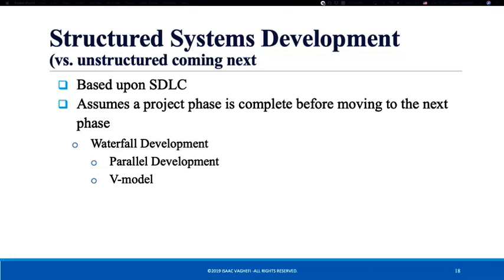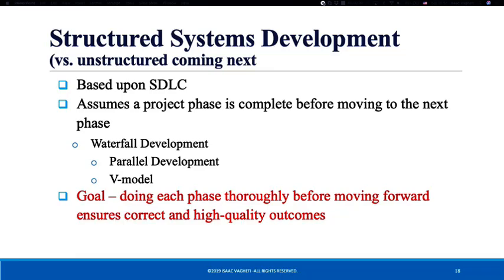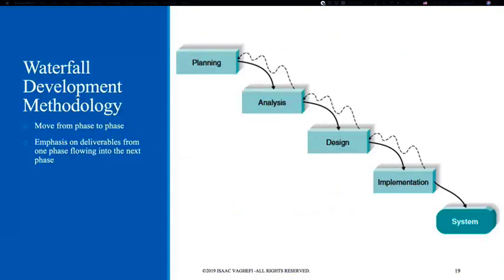A lot of methods are very structured compared to unstructured methods. When we say structured, that means we follow each step thoroughly and in detail, and the goal of a structured methodology is to provide high quality software or system at the end. Waterfall development is the well-known example, and there are two variations: parallel development and V-model, which I'm going to quickly explain in the next few slides.